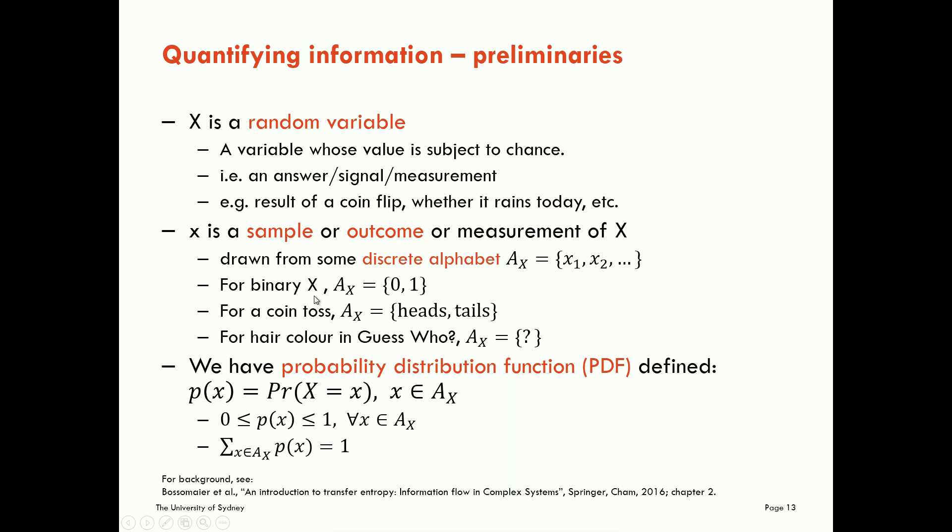For example, for a binary X, our set of realisations could be zeros or ones. For a coin toss, we can represent this as heads or tails. For hair colour in guess who? What would that be? It would be the set of blonde, brown, black, grey, and red. I think from memory are the five possible hair colours in guess who?